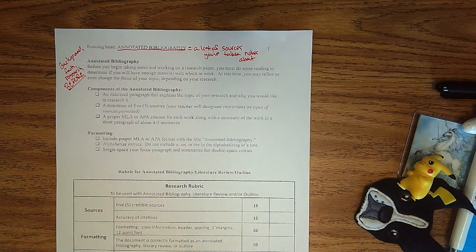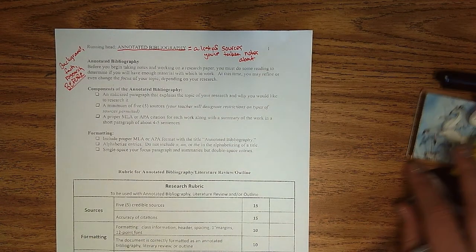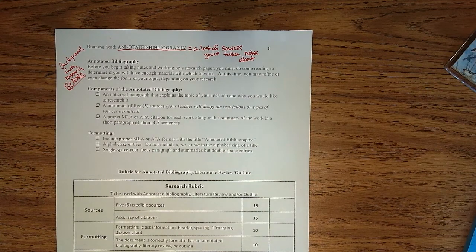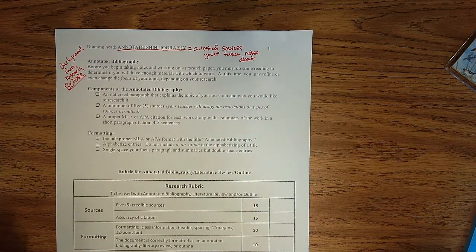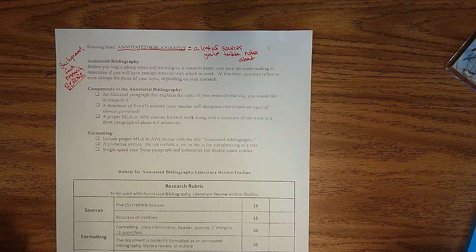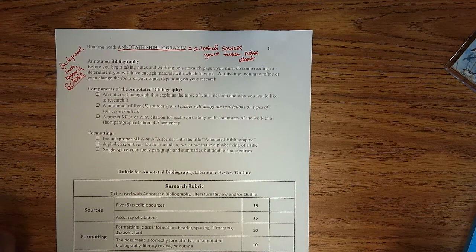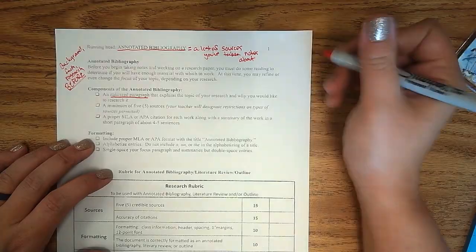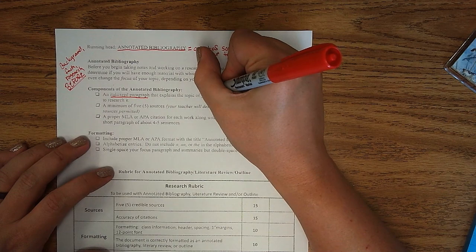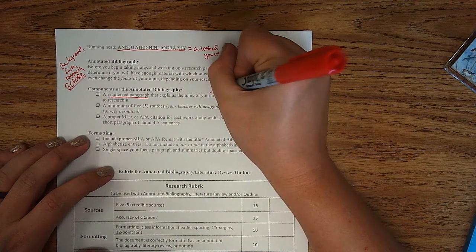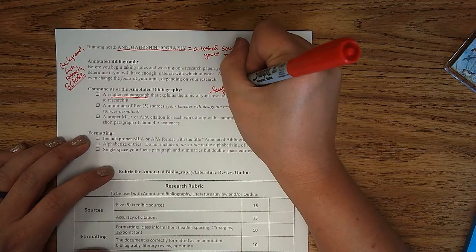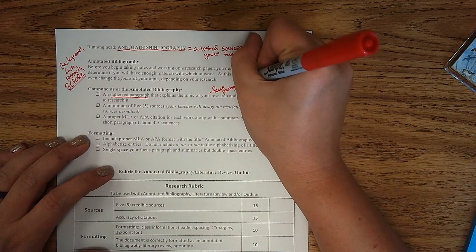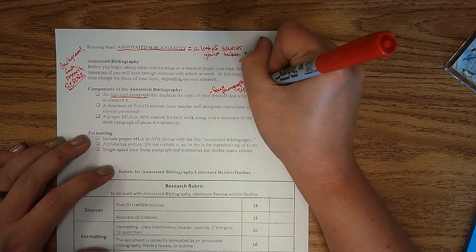You'll be gathering research. I have other videos that talk to you about the best ways to gather sources. But this is what your annotated bibliography will look like. And again, we're going to give you the template to that, so we want you to make sure that you follow it. You're going to start with an italicized paragraph that explains the topic of your research. We sometimes call this a focus paragraph. Other times we call it a topic paragraph. Those are sort of interchangeable here.